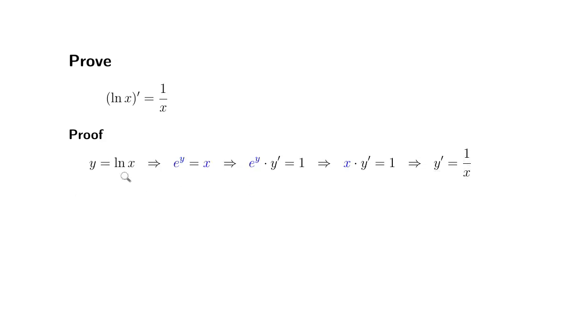But y prime is the same thing as the derivative of natural log of x. Therefore, the derivative of natural log of x is 1 over x. That's it. I hope that this was clear.